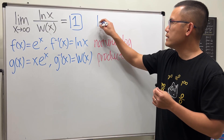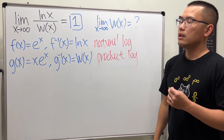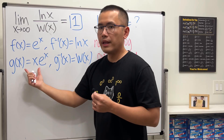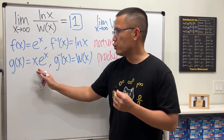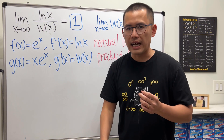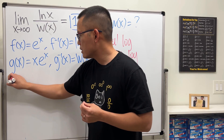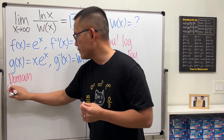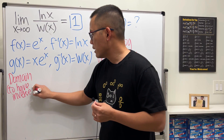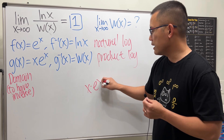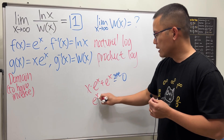Now let's investigate the limit as x approaches infinity of the Lambert W function. The function x·eˣ is not one-to-one, so in order to have a one-to-one inverse we need to find the minimum and restrict the domain. Taking the derivative of x·eˣ gives eˣ·(x + 1), which we set equal to zero to find the critical number.